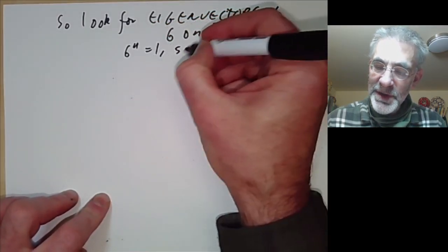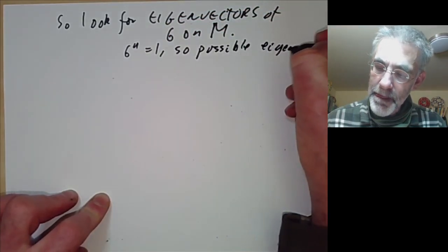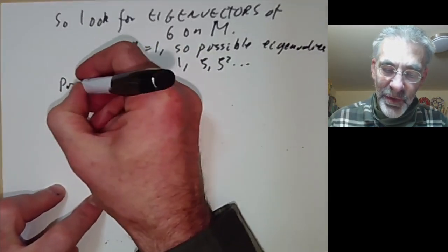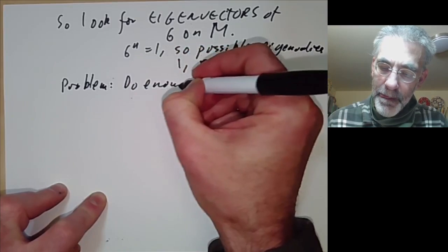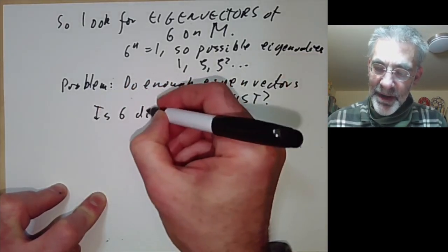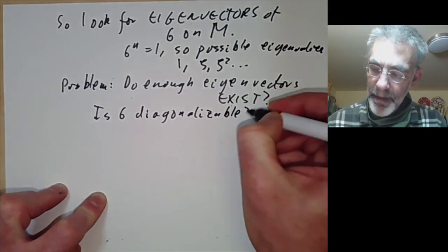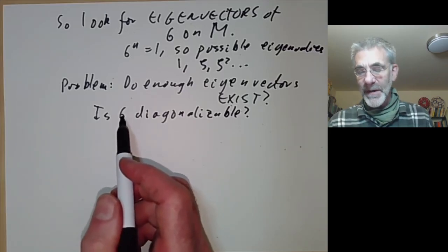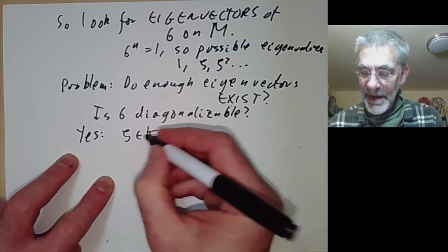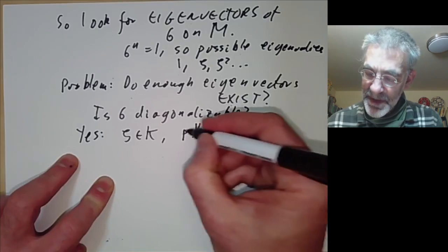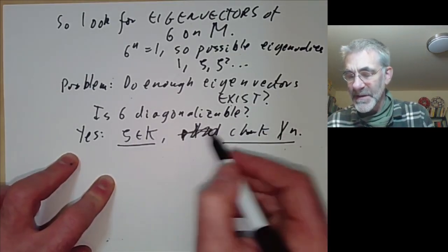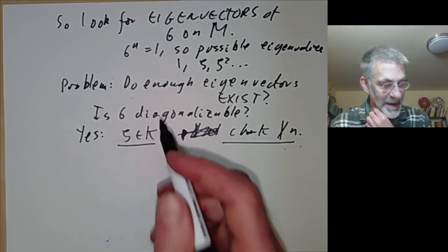We know sigma to the n equals 1, so the possible eigenvalues are just 1, zeta, zeta squared, and so on. The problem is: do enough eigenvectors exist? In other words, is sigma diagonalizable? In general there's no particular reason why it should be diagonalizable, but in this particular case it is diagonalizable because we assumed that zeta is in k. So k contains all the nth roots and the characteristic of k does not divide n. If these two assumptions don't hold, then we might not be able to diagonalize sigma, but in this case we can.